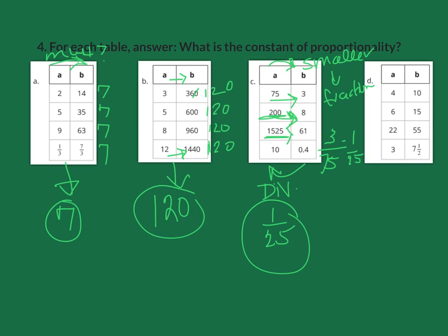This last one, what do we multiply 4 by to get to 10? We divide 10 divided by 4. If I reduce that, I get 5 over 2, which is 2 and 1/2. Can I multiply each of these by 2 and 1/2? 6 times 2 is 12, half of 6 is 3, gives us 15. 2 times 22 is 44, half of 22 is 11, gives us 55. 3 times 2 is 6, half of 3 is 1.5, gives us 7.5. Our constant of proportionality is 2 and 1/2.